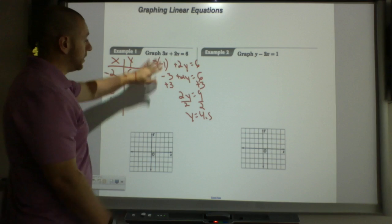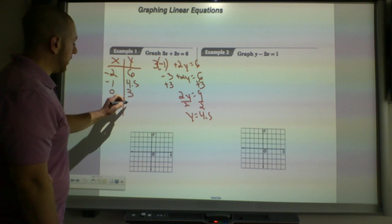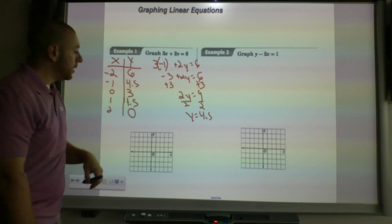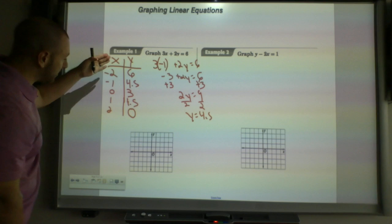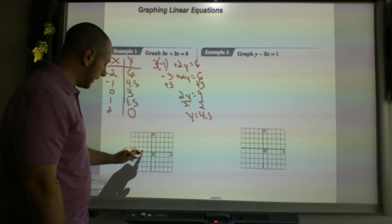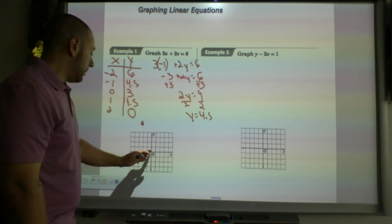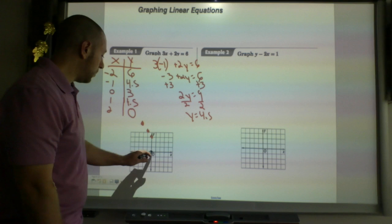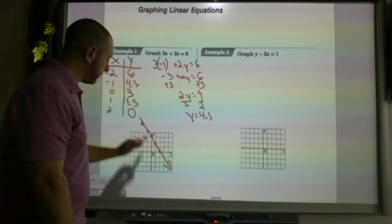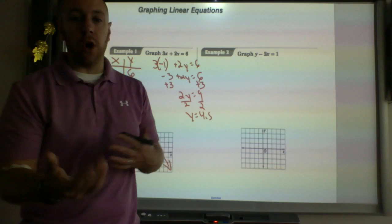If I plug in zero, this whole term cancels out, so I divide by 2, this is going to be 3. This is going to be 1.5 and then this is going to be zero. I've generated all these points, but now I can plot. I would do negative 2, 6, negative 1, 4.5, zero, 3, one, 1.5, and two, zero. I can now graph that line and I'm done.